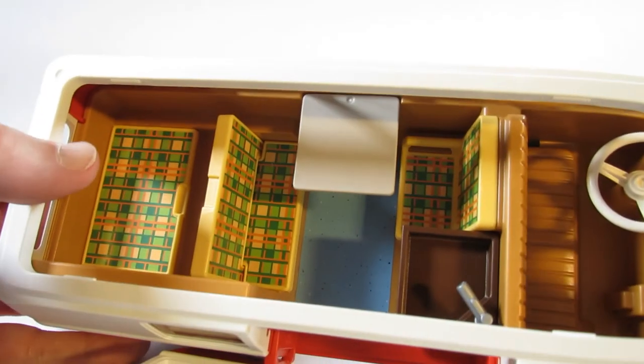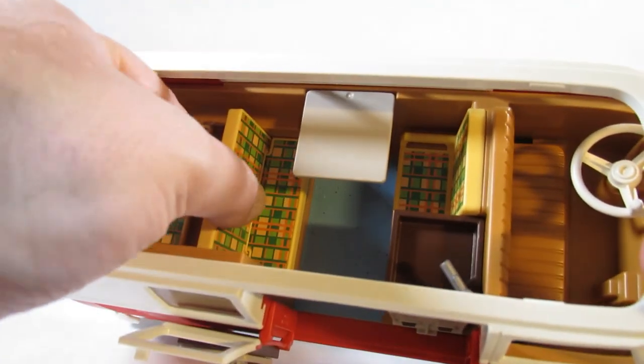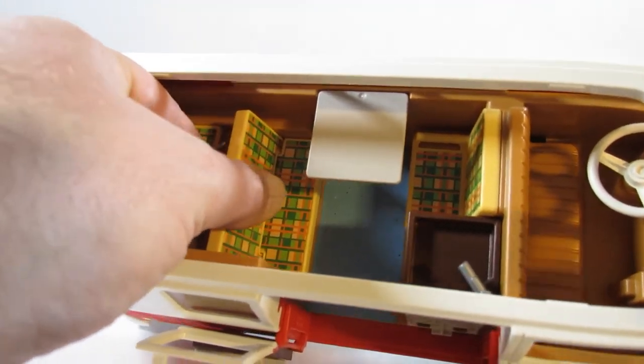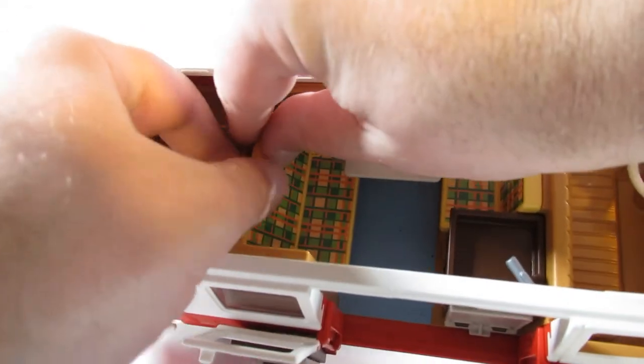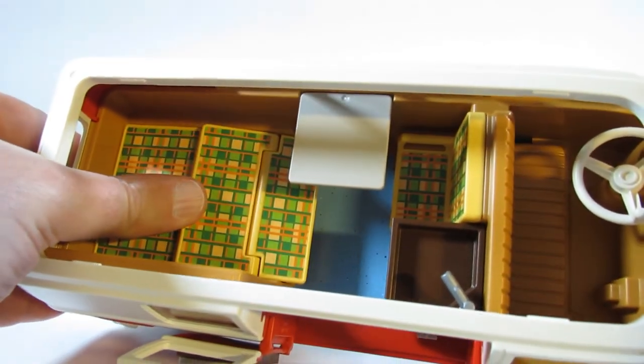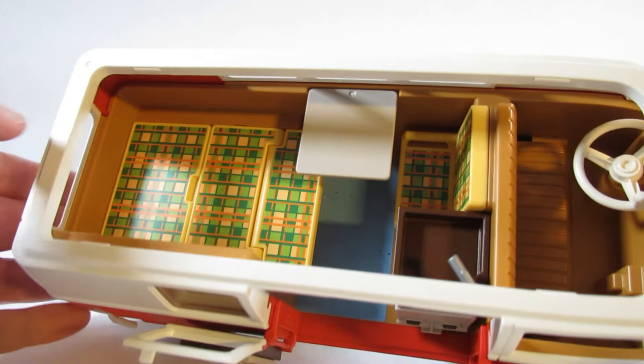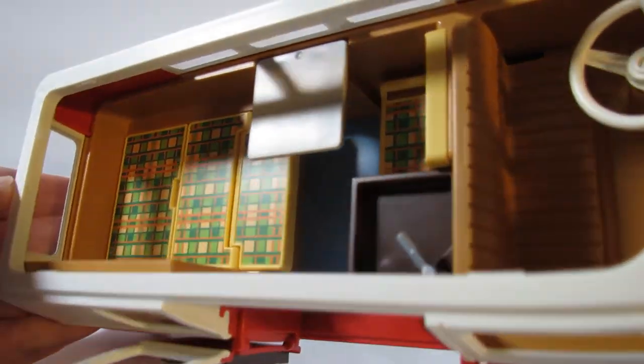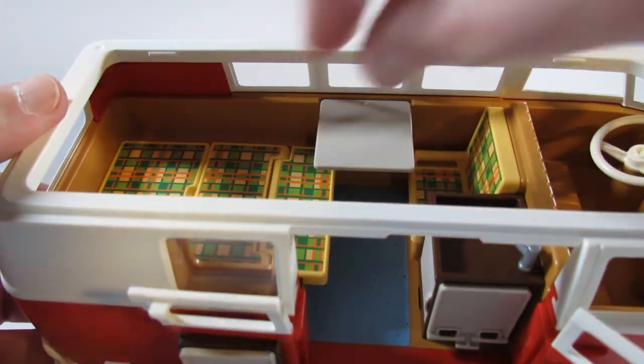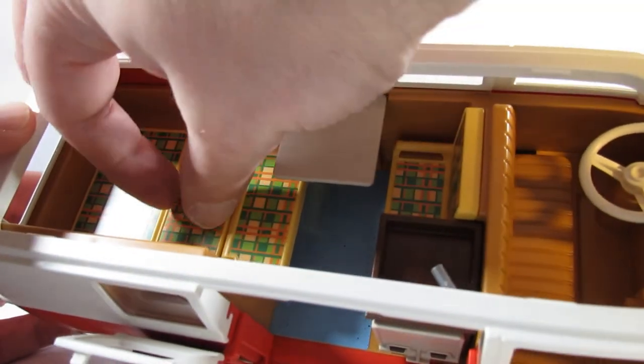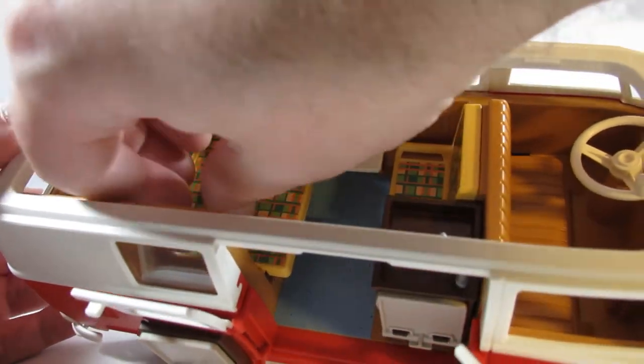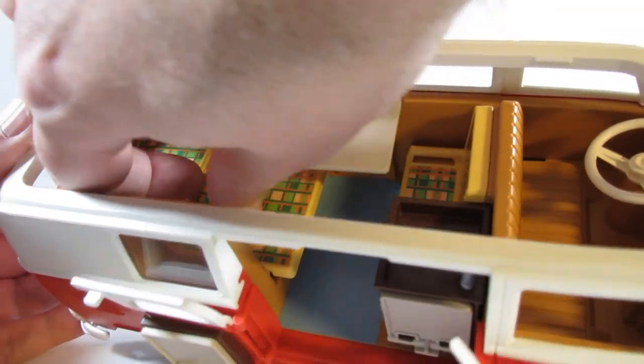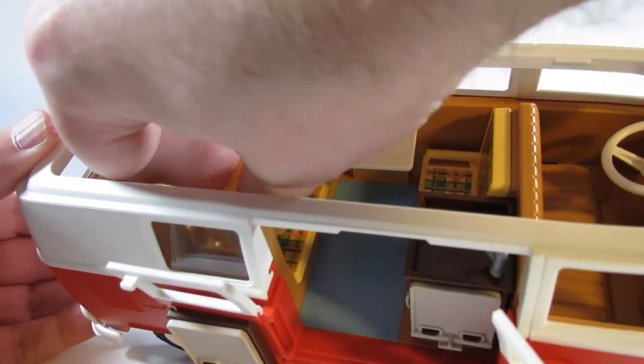That's a sticker. Now the sofa turns into a bed. So it takes a little work to pull it out. There we go. And there we have a little bed. We can put the characters and then we can pull up on it and fold it back down.